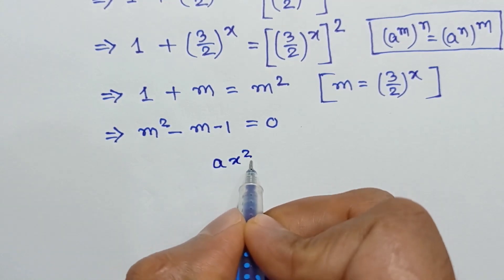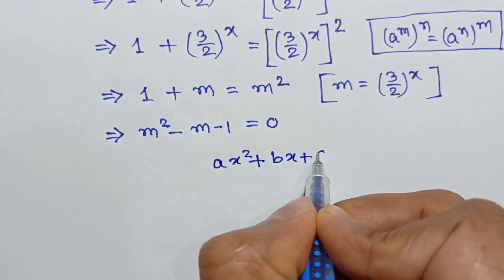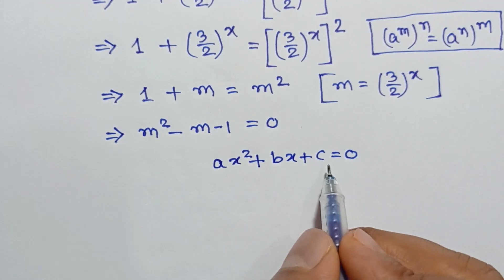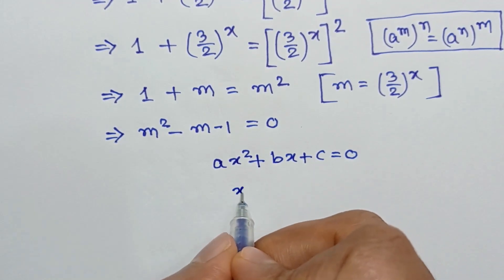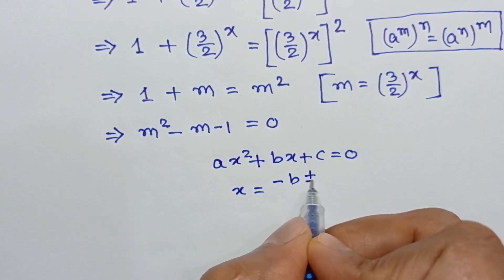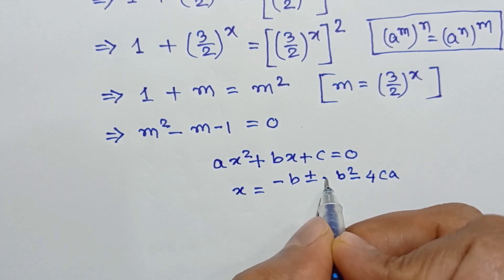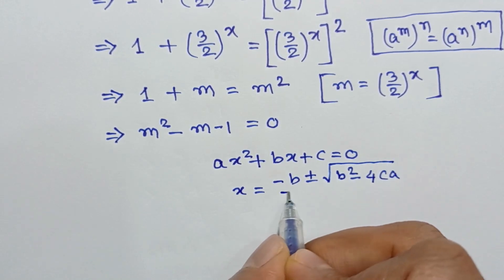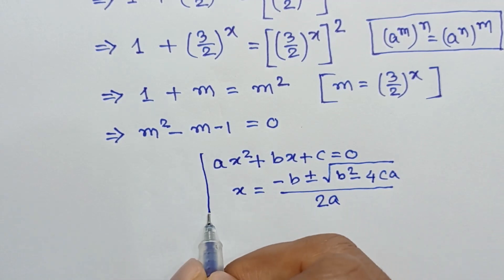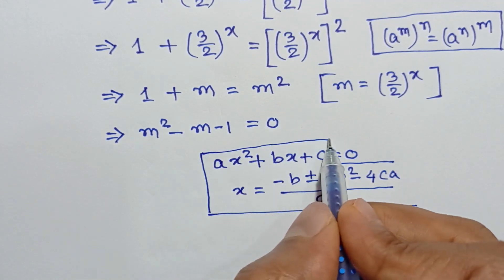For the standard quadratic equation A times x squared plus B times x plus C equals 0, the solution is x equals negative B plus or minus the square root of B squared minus 4AC, all over 2A. This is the quadratic formula.